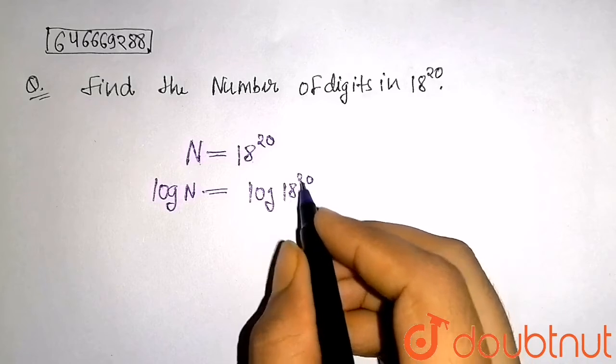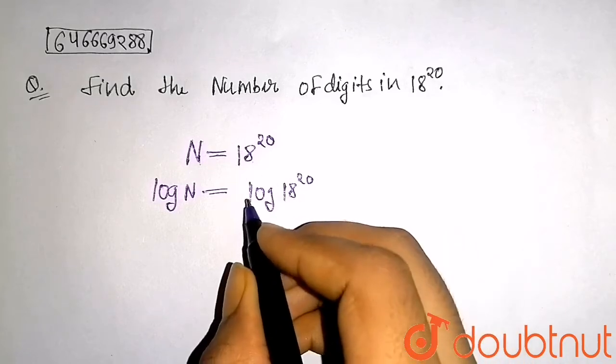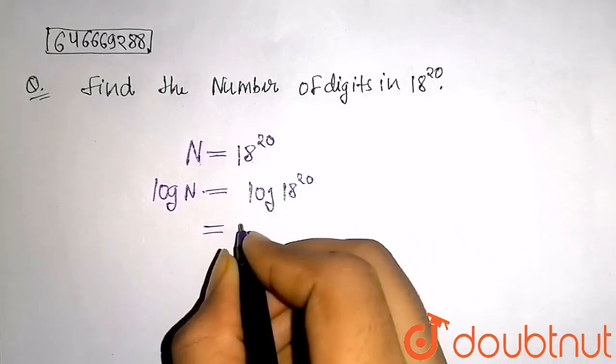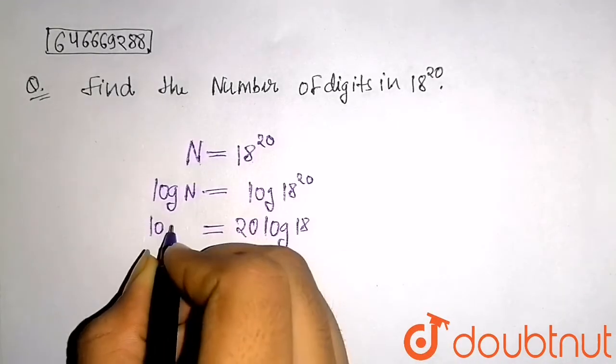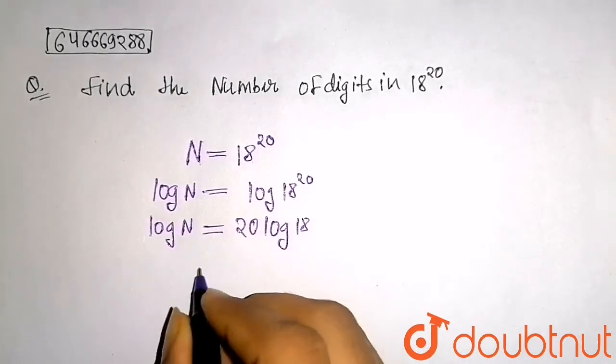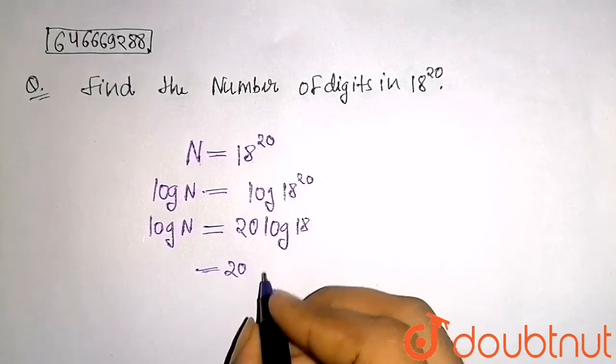So I will get log N = 20 log 18. Now log 18 can be written as what? Log 18 can be written as log of 3 squared times 2, because 3 squared is 9 and 9 times 2 is 18.